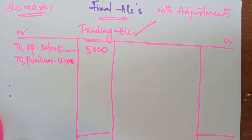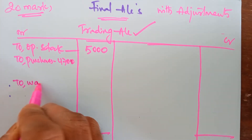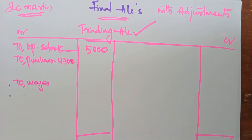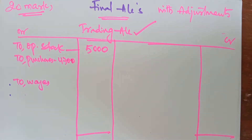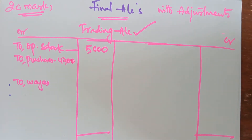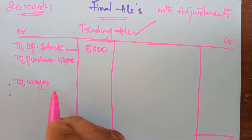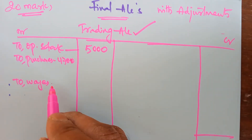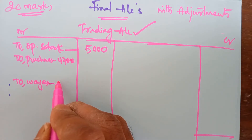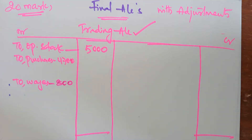Purchases are also goods, therefore they appear in the trading account. The next item is wages. Wages is an expenditure, so when you come across an expenditure you have to decide whether it is direct or indirect. Wages happen in the factory — wages are remuneration given to laborers connected with goods — so this expenditure is connected with goods, called productive expenditure. It is direct, therefore it appears in the trading account. Put the amount of wages in the inner column; its amount is 800.